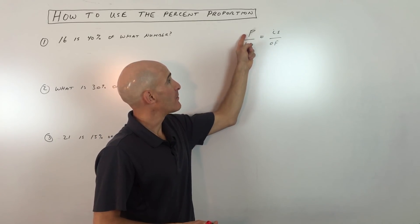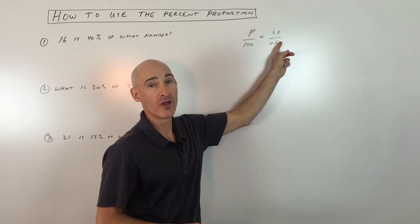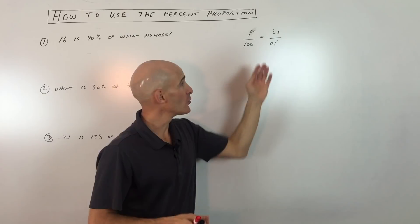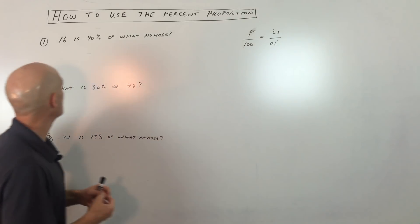So we're comparing the part out of the whole, or the total, equals the part out of the whole, which is the total. Those two ratios are equal, and it makes a proportion, and we can solve. So let's get into example number one.